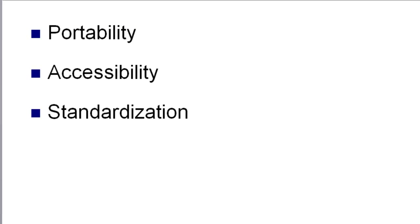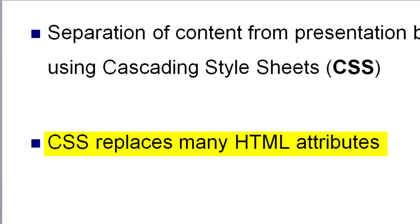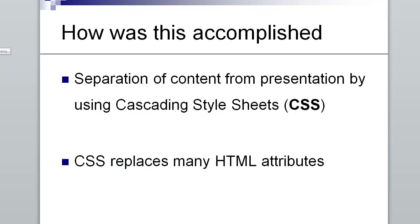The initial goal of XHTML back in the 2000s was portability, accessibility, and standardization. Much of this was accomplished by the separation of content from presentation using Cascading Style Sheets, which is CSS. The use of CSS was introduced in the XHTML standard, and CSS replaced many traditional HTML attributes, so content was in the document while style was being called by the stylesheet.